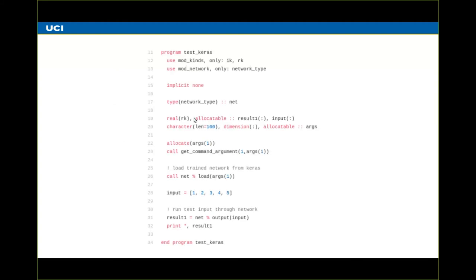Showing what it looks like on the Fortran side: it's really just a matter of instantiating this network type, then loading that configuration that came from Keras. When you want to make your prediction, it's just as simple as passing your input array into the network. We really tried to make this very easy — all you have to do is pass in that configuration and you're good to go.